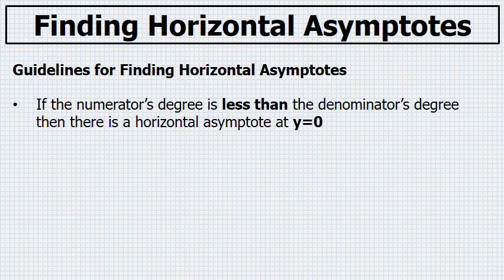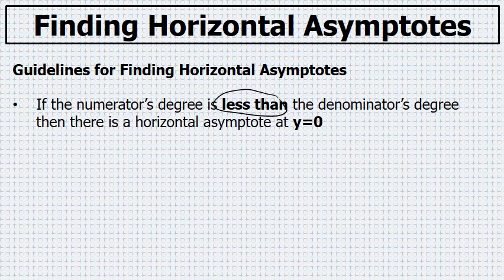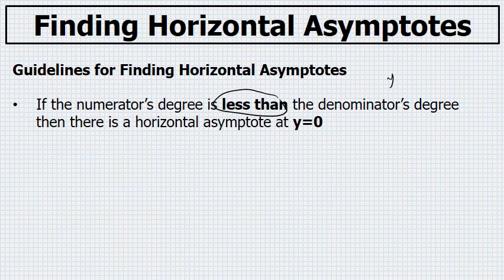First, if the numerator's degree is smaller — less than the degree of the denominator — then there is always a horizontal asymptote and it is at y equals zero. For example, in the function y equals x squared plus 5 over x cubed plus 5,